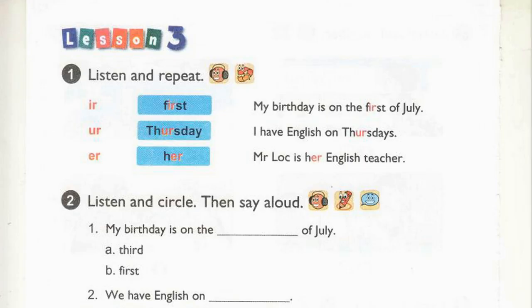Page 22. Lesson 3. Activity 1. Listen and repeat. Er. First. My birthday is on the 1st of July. Er. Thursday. I have English on Thursdays. Er. Er. Mr. Locke is her English teacher.